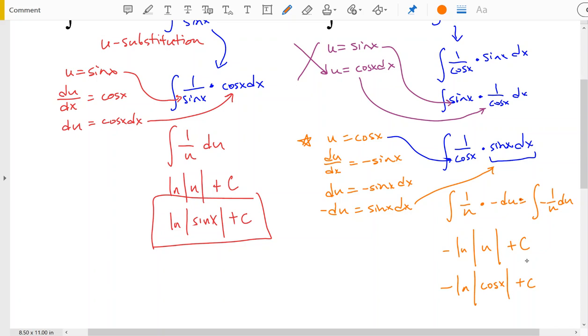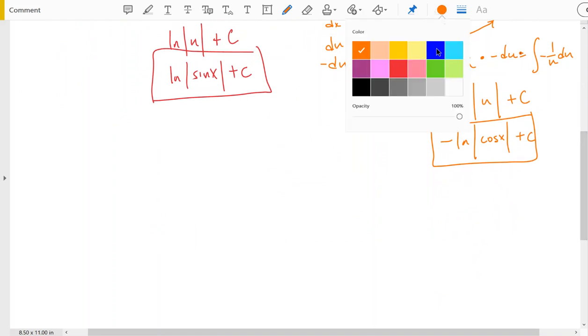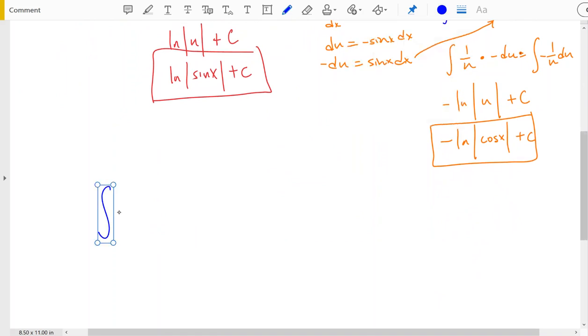And so now we have two new rules that we want to add to our list of six. We have the antiderivative of tangent of x is equal to negative natural log the absolute value of cosine x plus c. And the antiderivative of cotangent x dx is equal to the natural log sine x plus c.